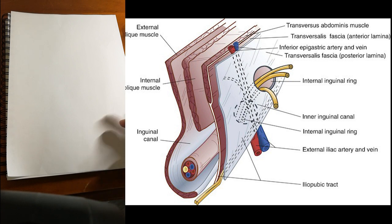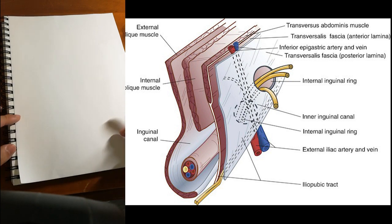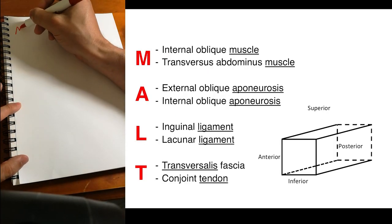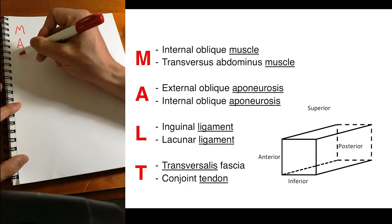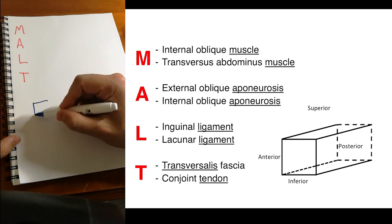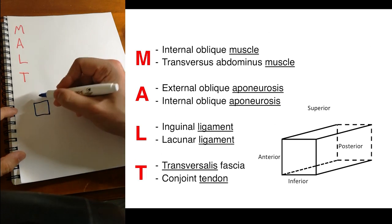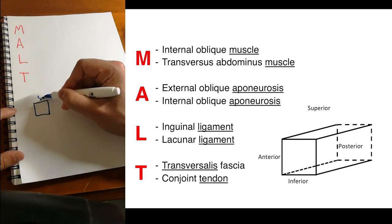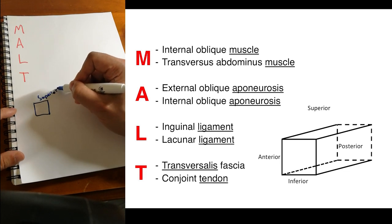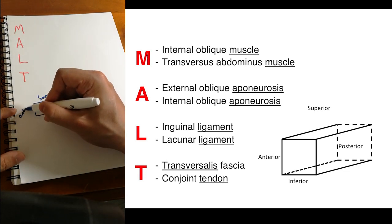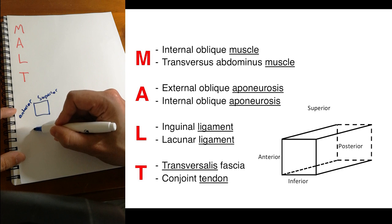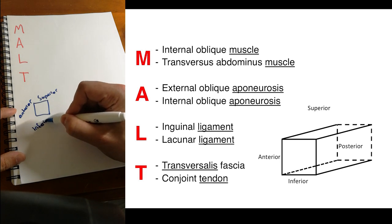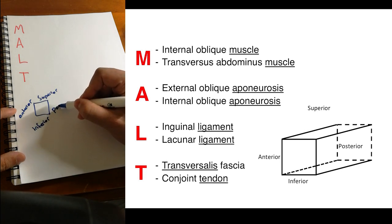And to do this I'd like to use a mnemonic you may have heard of called MALT. So essentially to use this mnemonic you have to visualize the inguinal canal kind of like a four-sided structure with a superior border, an anterior border, an inferior border, and a posterior border.